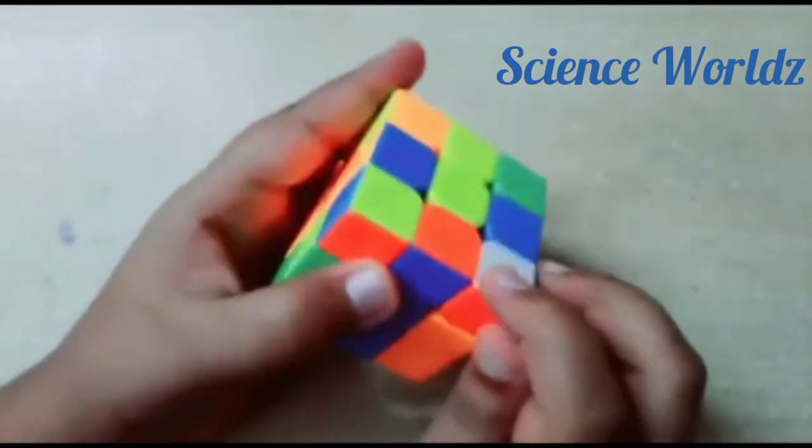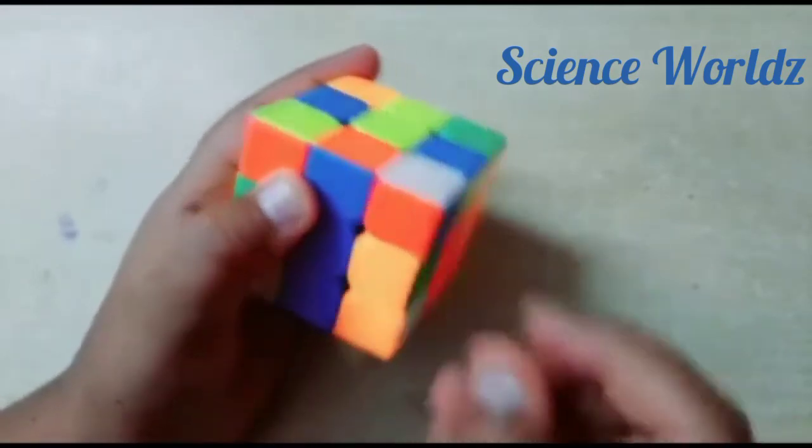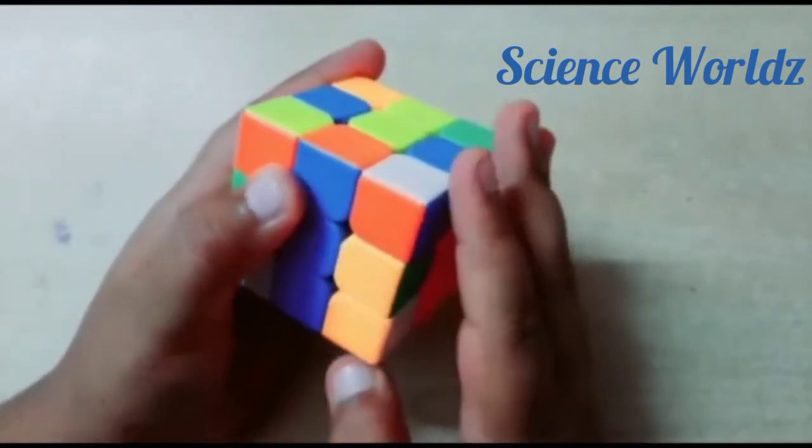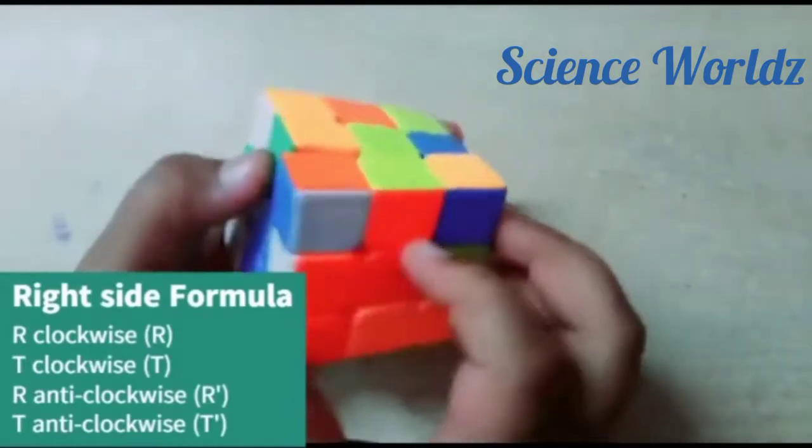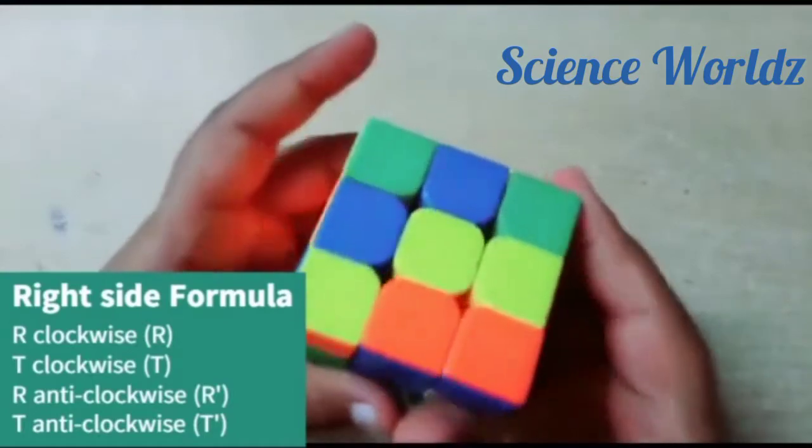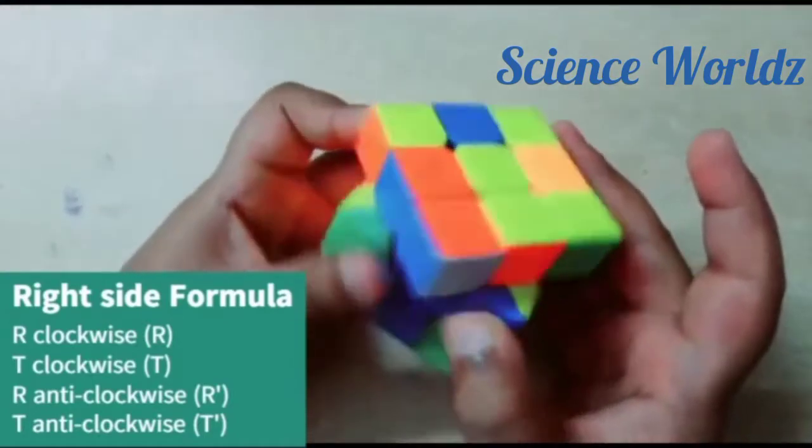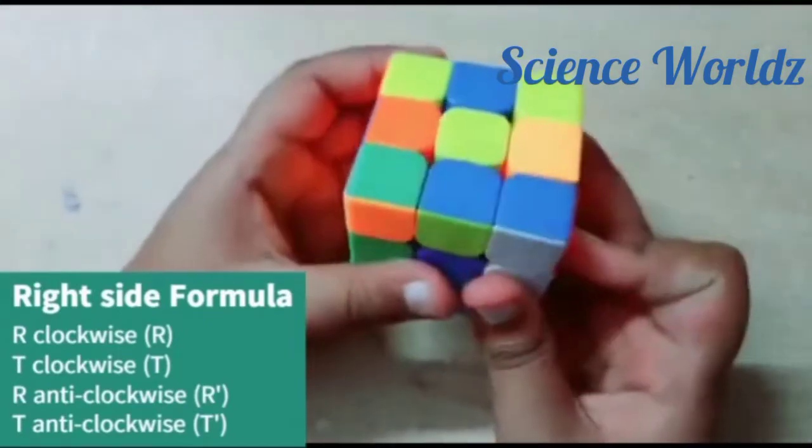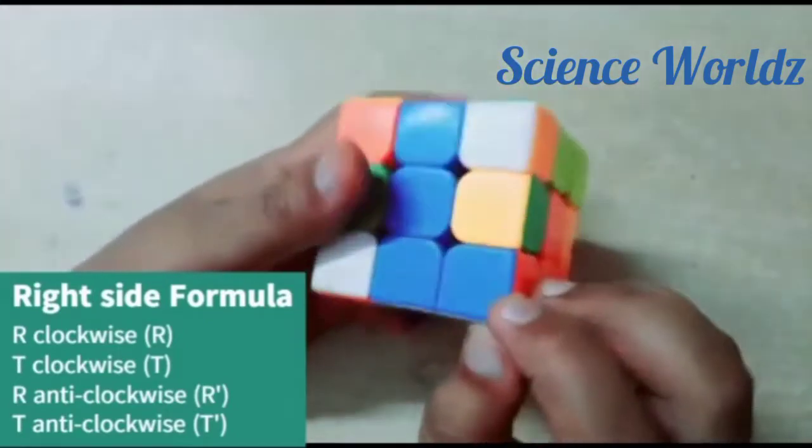So these three are the corner pieces. So this piece should actually go here. Now we must take this piece to here. Use our right side formula: right up, top to the right, right down, top to the left. Right up, top to the right, right down, top to the left. Repeat it until you get this piece let down and we got it.